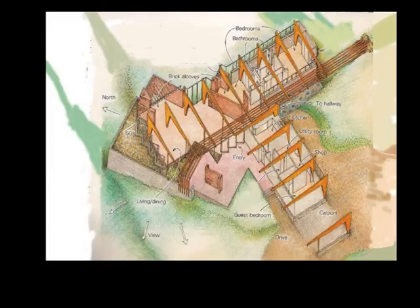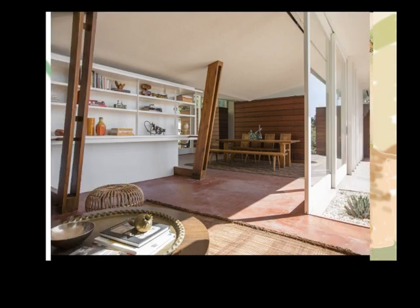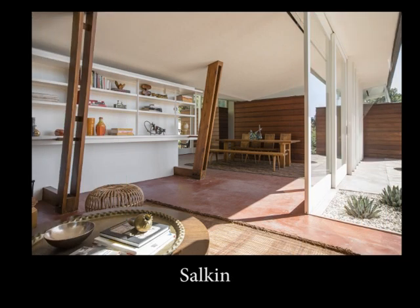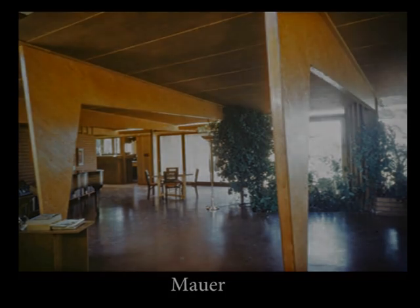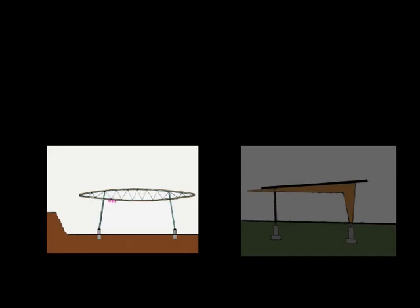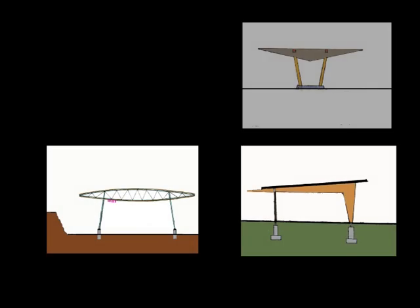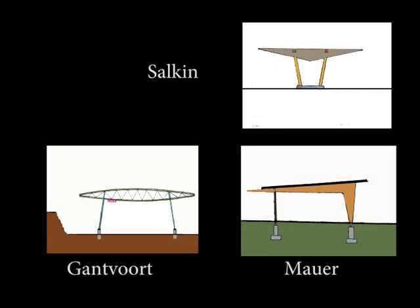In all three cases, the construction frees the walls from any supporting function, allowing windows from floor to ceiling. No internal walls are needed to support the roof, so you can have large open spaces underneath. John Lautner never designed the same house twice, so each of the three houses has a different roof supporting system.